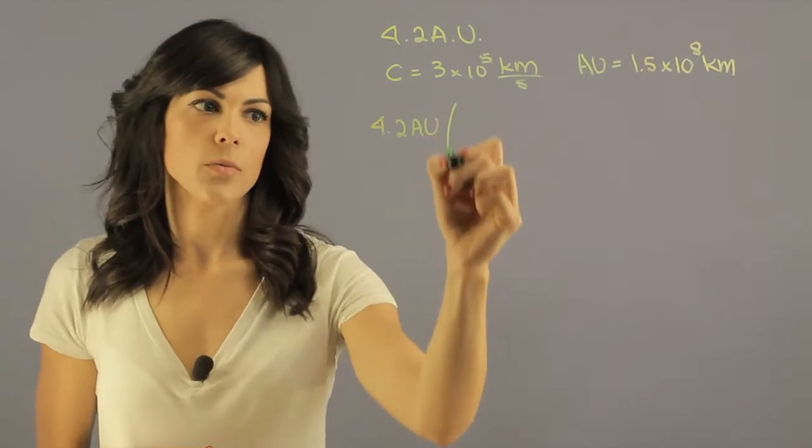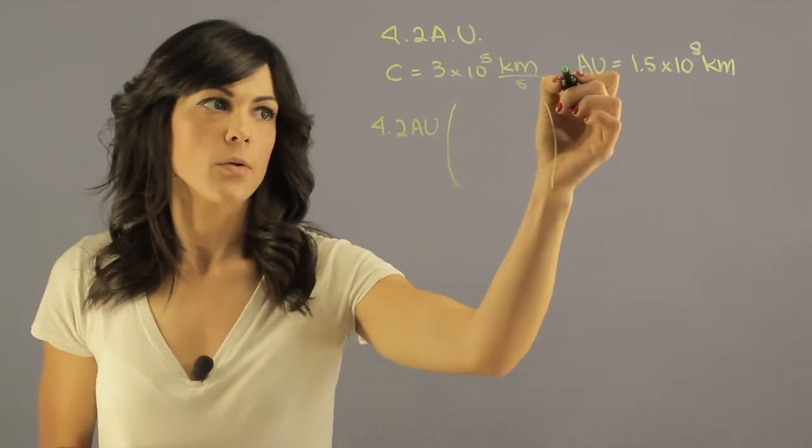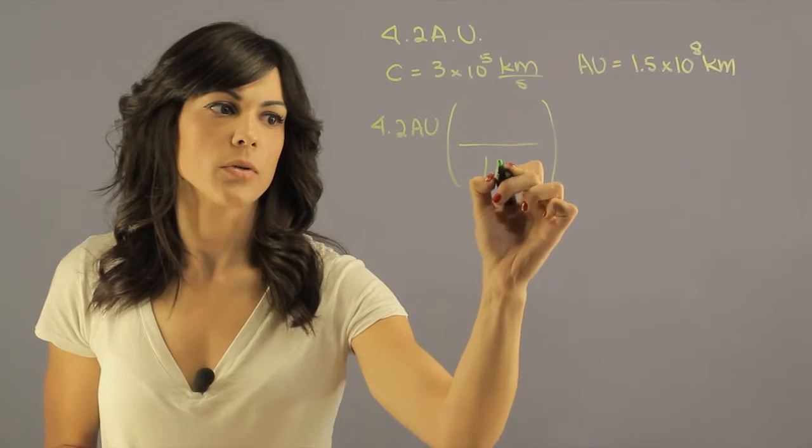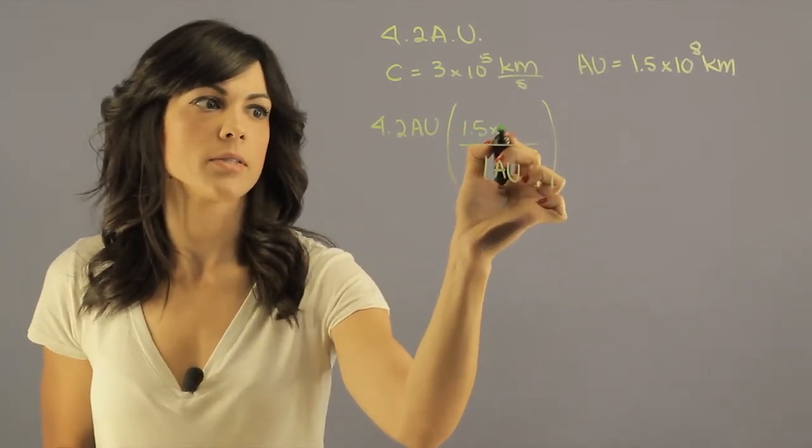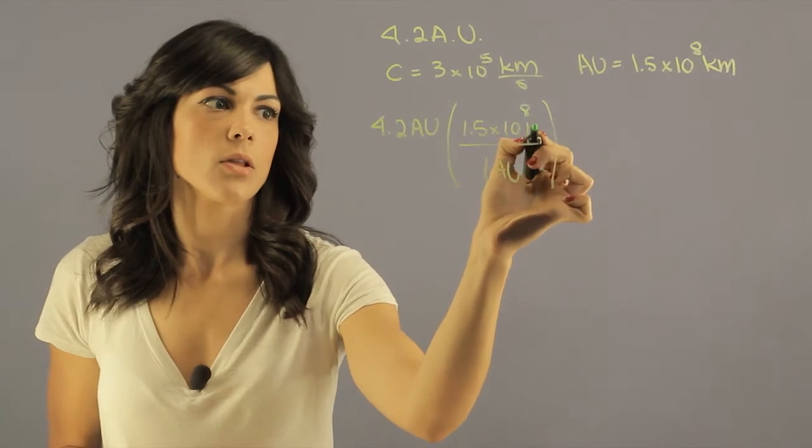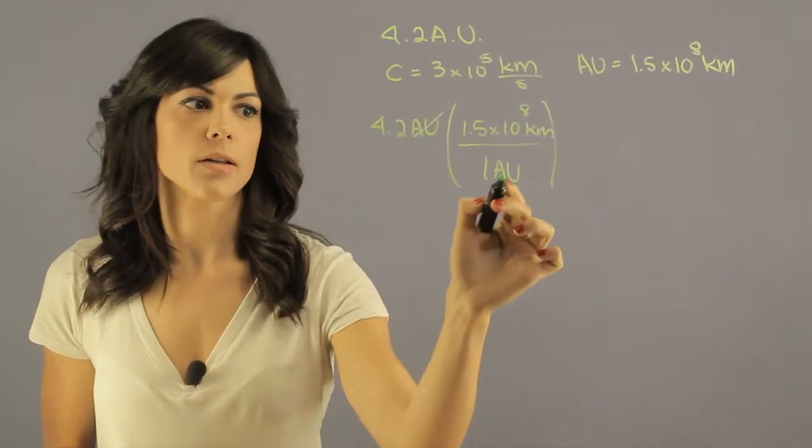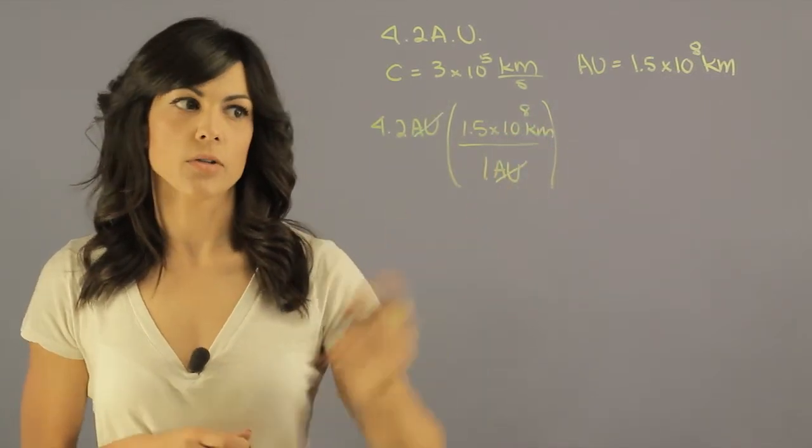So we need to match astronomical units here and we know that one astronomical unit is equal to 1.5 times 10 to the 8 kilometers. So here we already got an astronomical unit turned into kilometers.